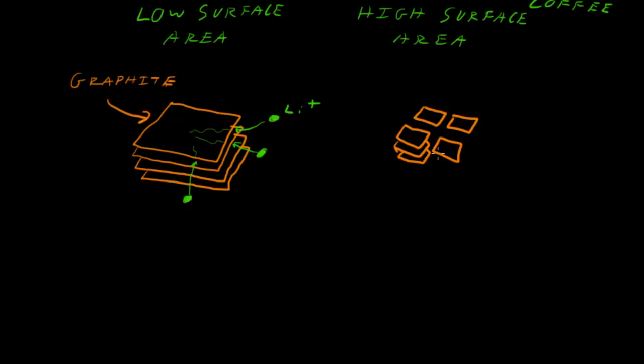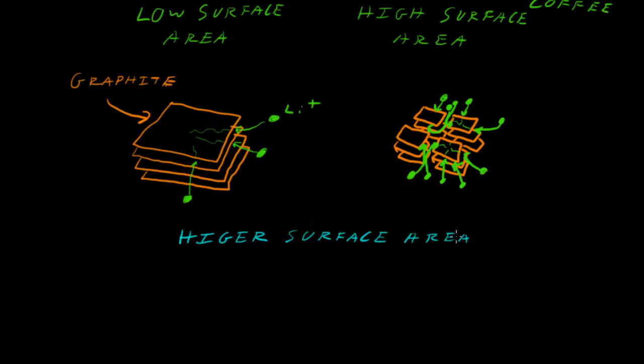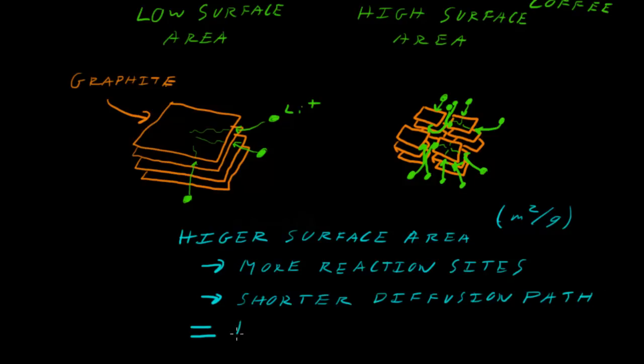However, if we were to cut apart our graphite into smaller pieces, we get a higher surface area for the same amount of mass and we have more sites for the lithium to go in and out of. Additionally, because the pieces are smaller, there's less distance that the lithium has to diffuse through. The result with this higher surface area is that we have more reaction sites and a much shorter diffusion path. Both of those taken together means we have a faster reaction, faster reaction kinetics.